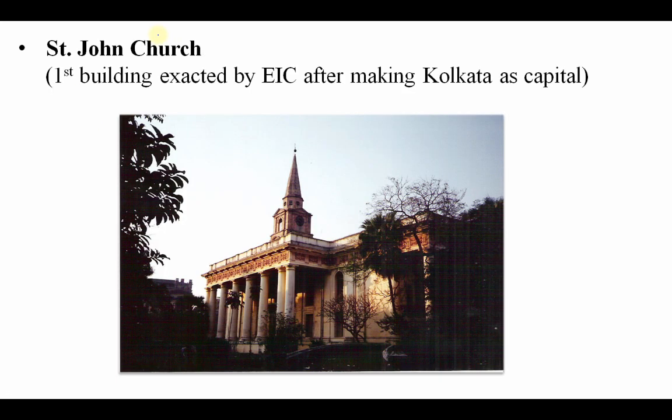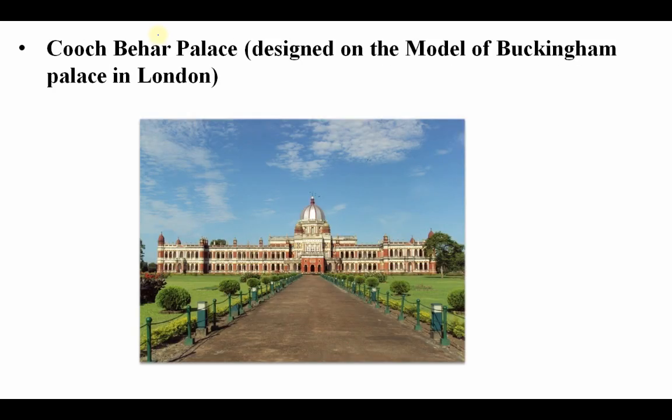St. John Church in Kolkata is considered the first building erected by the East India Company after making Kolkata their capital. Kuch Bihar Palace is also important — it is designed on the model of Buckingham Palace in London.